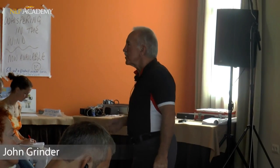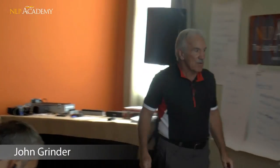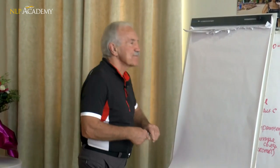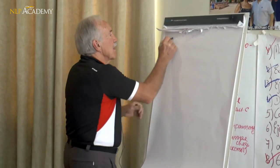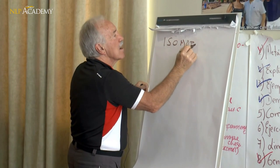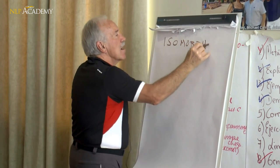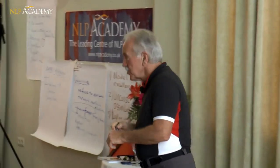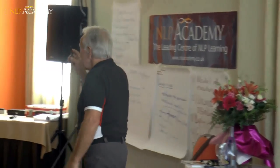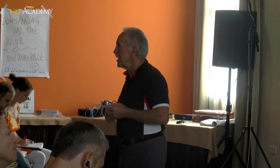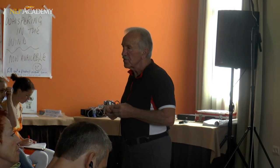Isomorphic metaphor is somewhat more complicated. It's called isomorphic metaphor. Isomorphic just means one-to-one mapping with relationships preserved. It comes from mapping in certain forms of mathematics. It's a very simple concept.